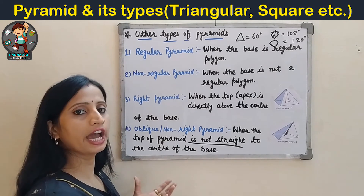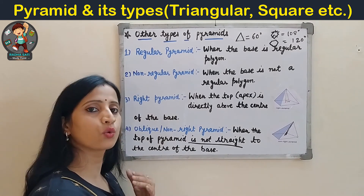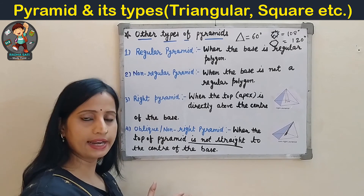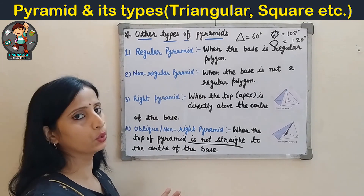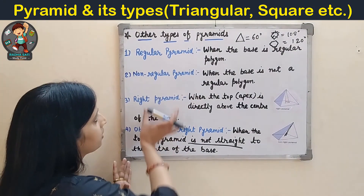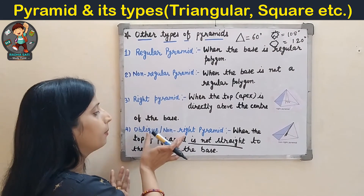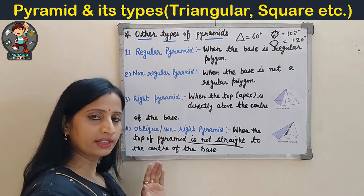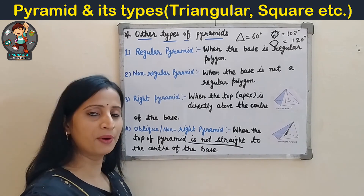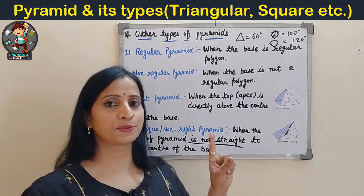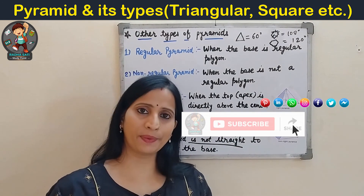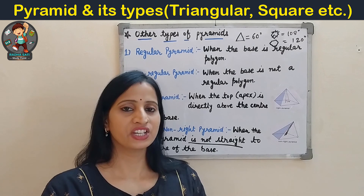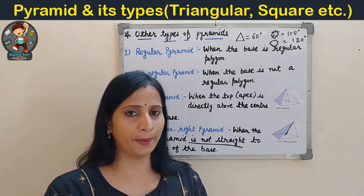I hope all the types of pyramids — triangular, square, pentagonal, hexagonal, heptagonal, octagonal, nonagonal and decagonal — are now clear to you, as well as the classifications: regular pyramid, non-regular pyramid, right pyramid and oblique pyramid. If you liked this video, please share it with your friends and family, subscribe to my channel for more videos, and press the bell icon to get notifications of my latest videos. See you in the next video with a new concept. Goodbye, take care.